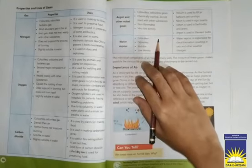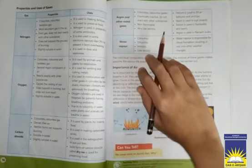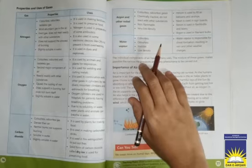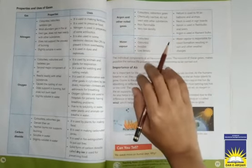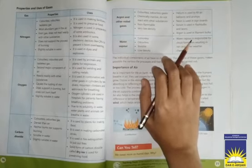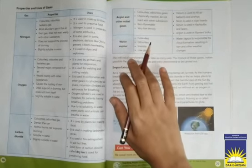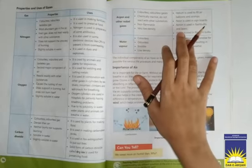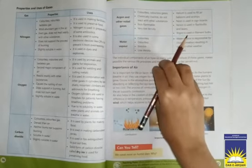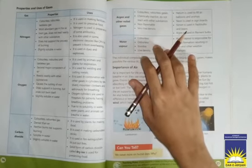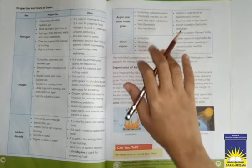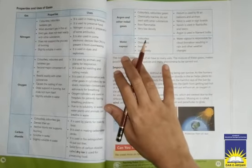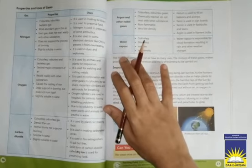Now we are going to discuss about uses of argon and other noble gases. Helium is used to fill air balloons and airships. Neon is used in sign boards. Xenon is used in flash bulbs and lasers. Argon is used in filament bulbs. Helium gas basically air balloons and airships ko fill karne ke liye use hoti hai. Neon gas eye-catching colors ki vajah se sign boards mein use hota hai. Xenon flash bulbs aur lasers mein use hota hai. Isi tarike se argon use hota hai filament bulbs mein. Filament bulb is a bulb that produces light by heating up a filament of wire inside a bulb with an electric current.